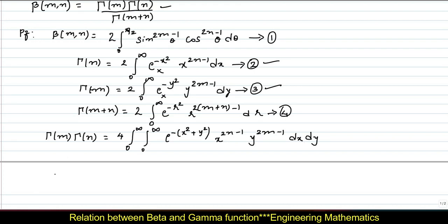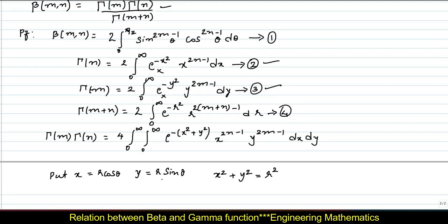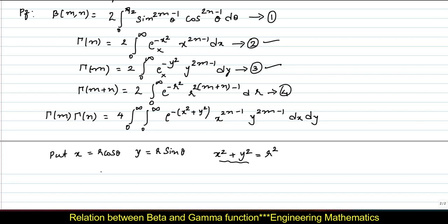Now we will go with substitution. Put x equal to r cos theta — it is a standard substitution — and y equal to r sin theta. Then squaring and adding these two, x square plus y square equals r square cos square theta plus r square sin square theta. Taking out r square as common, we are left with cos square theta plus sin square theta, which by the trigonometric identity equals 1, so x square plus y square equals r square.